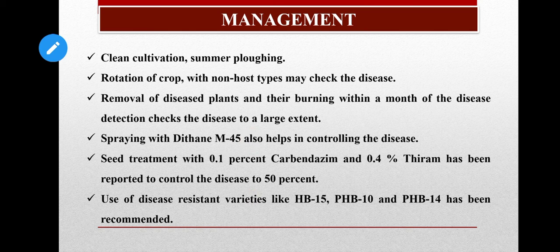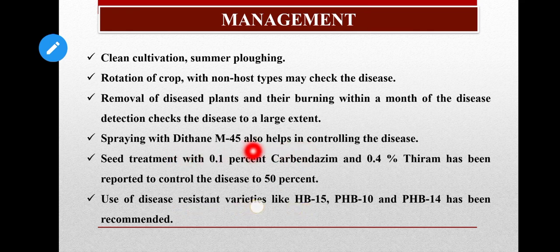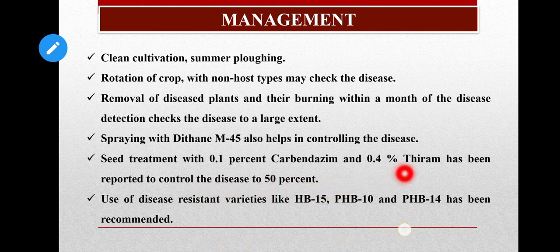Dithane M-45 must be used properly; otherwise it may induce fungicide resistance. To combat this, use fungicides in mixed formulation or alternately — for example, use Dithane M-45 one week, then the next week use another broad-spectrum fungicide such as Carbendazim or Mancozeb. The mode of action of the alternating fungicides must be different. Alternatively, you can use a combination such as Dithane M-45 plus Carbendazim or Dithane M-45 plus Mancozeb. The third and most ecological management practice is the use of resistant varieties, of which many are available in the market.